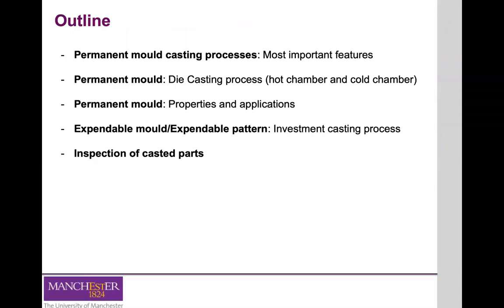Today we're going to talk about the other two metal casting processes. We'll start by looking at permanent molds and the most important features of these metal molds. We'll look at the different types of die casting — either hot chamber or cold chamber — and where they apply depending on the materials being cast. Then we'll look at investment casting, where the mold and pattern are only used once. Finally, we'll cover how to inspect cast parts for superficial or internal defects that can arise during manufacturing.